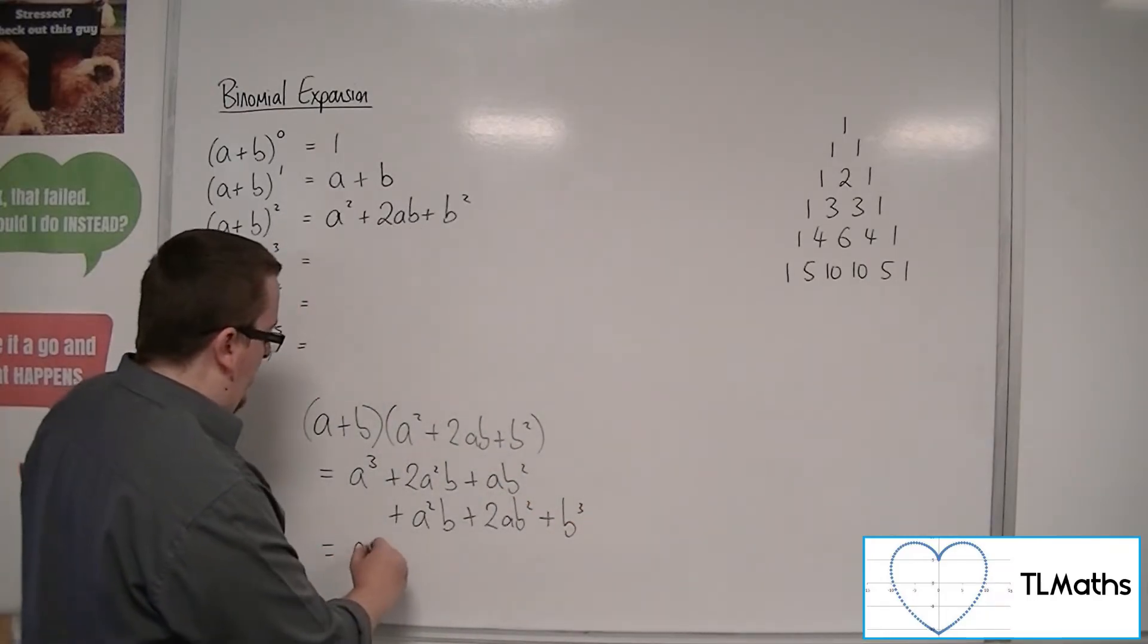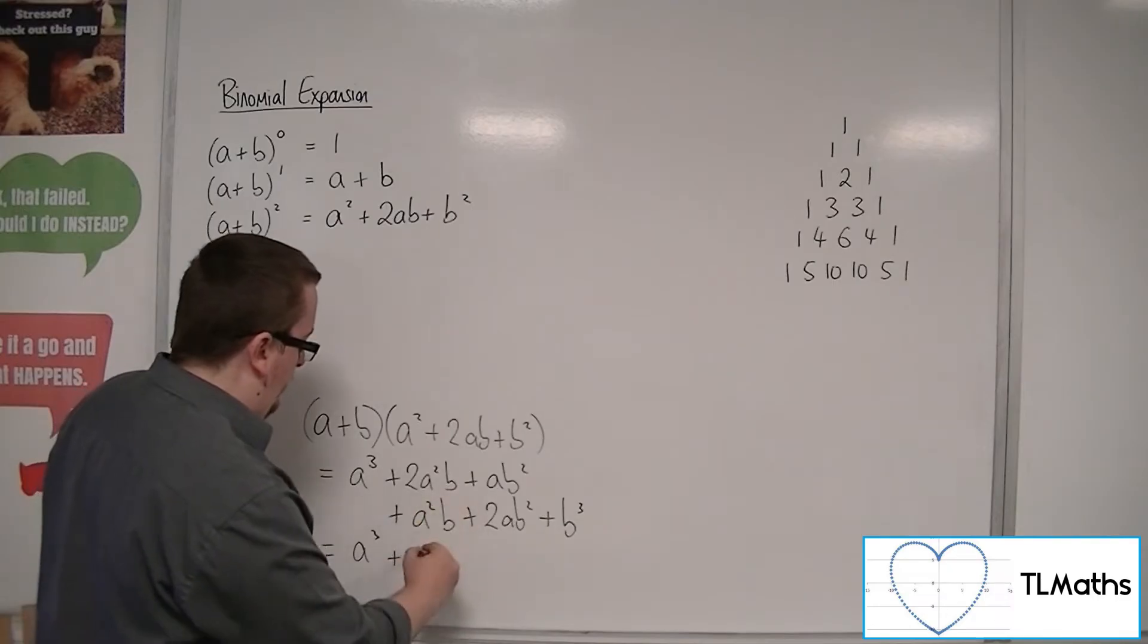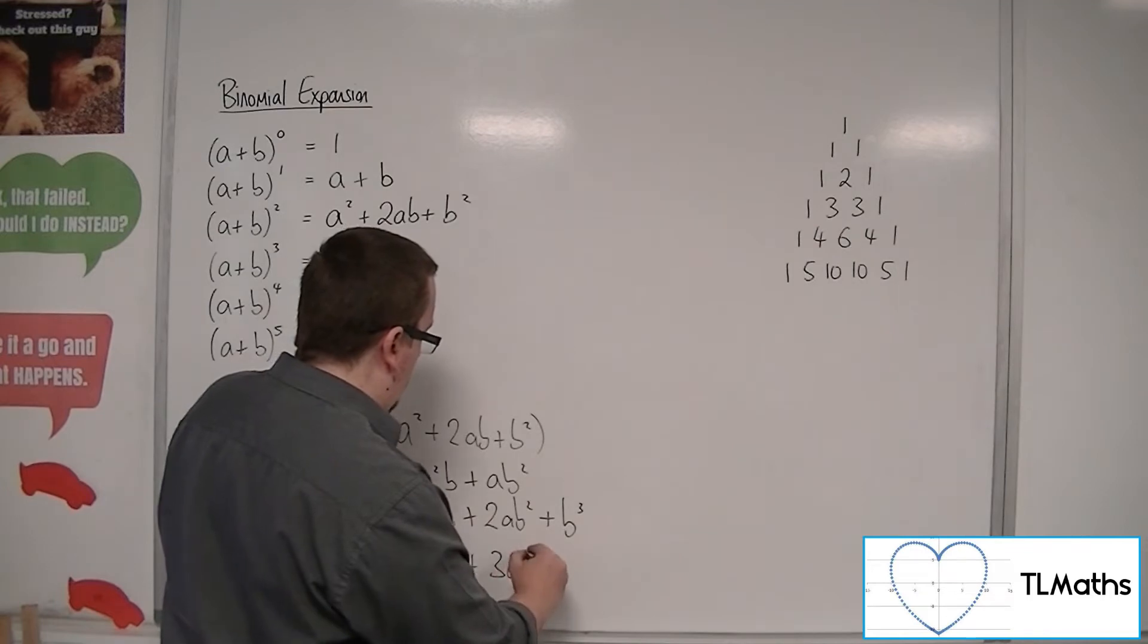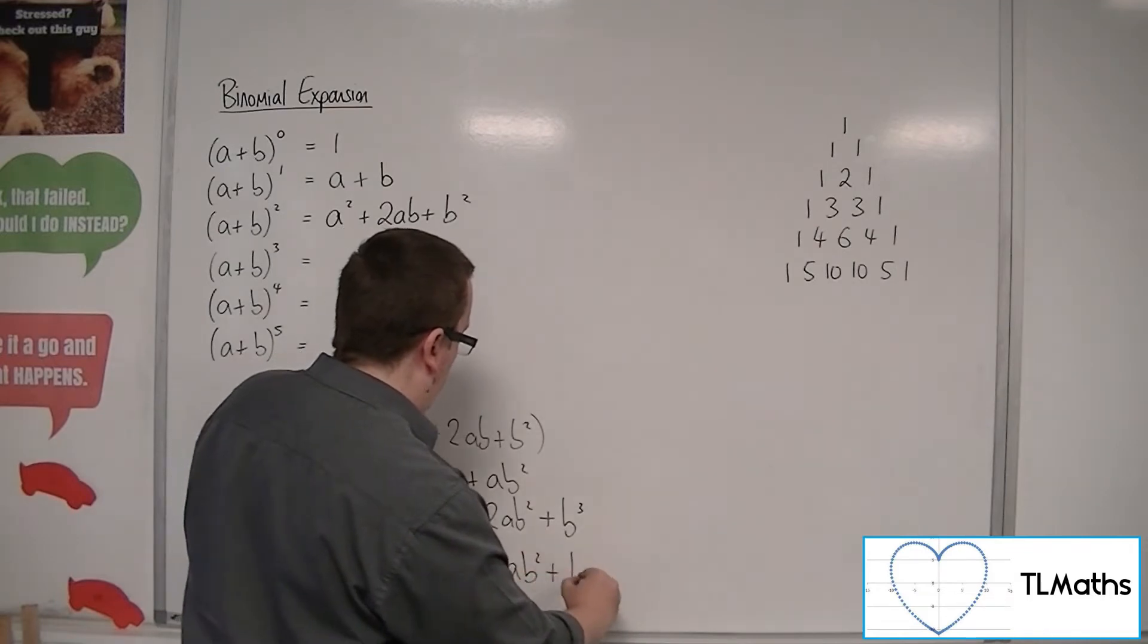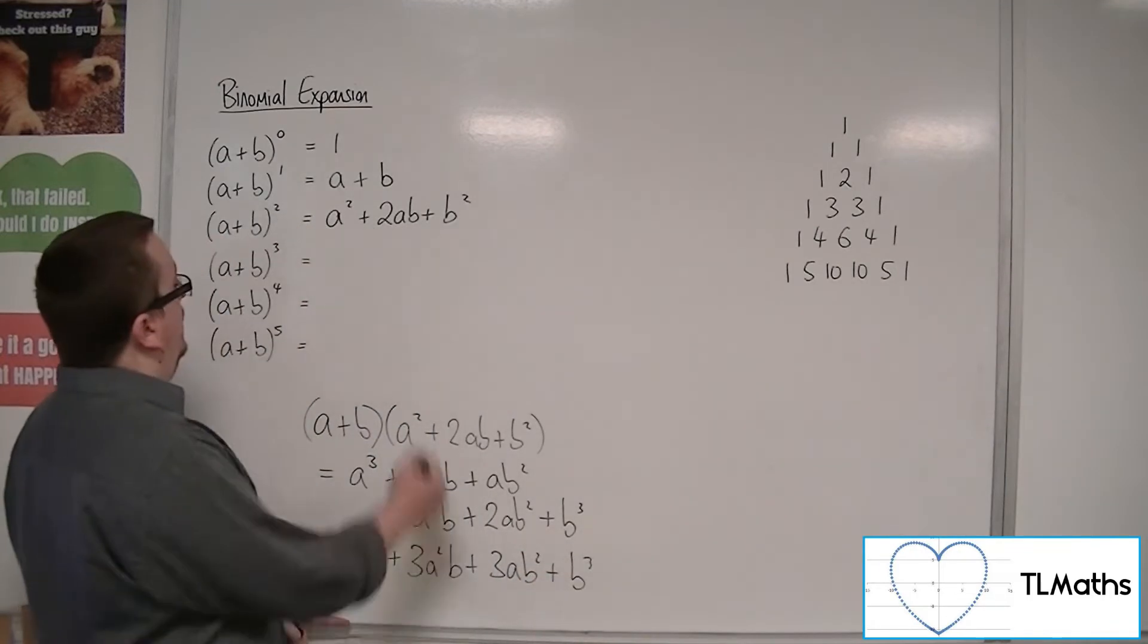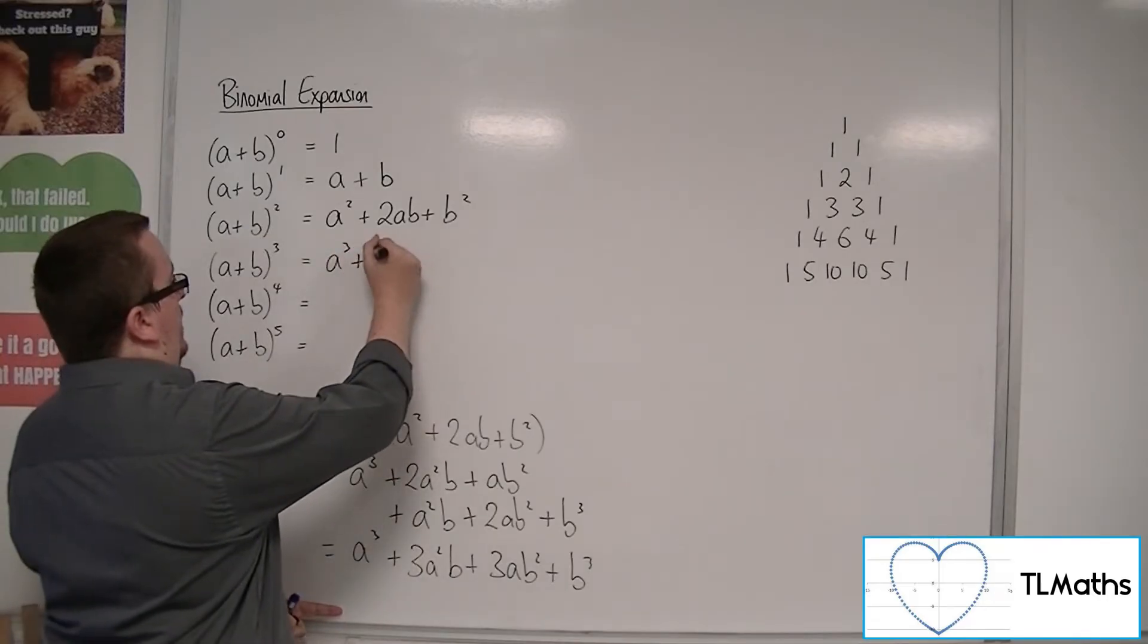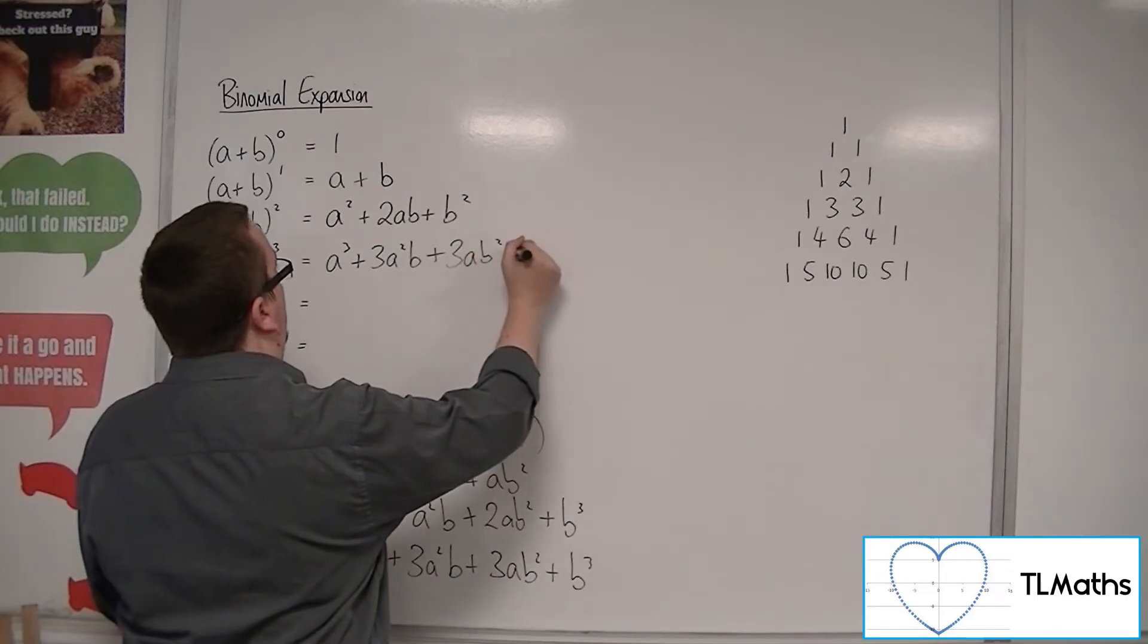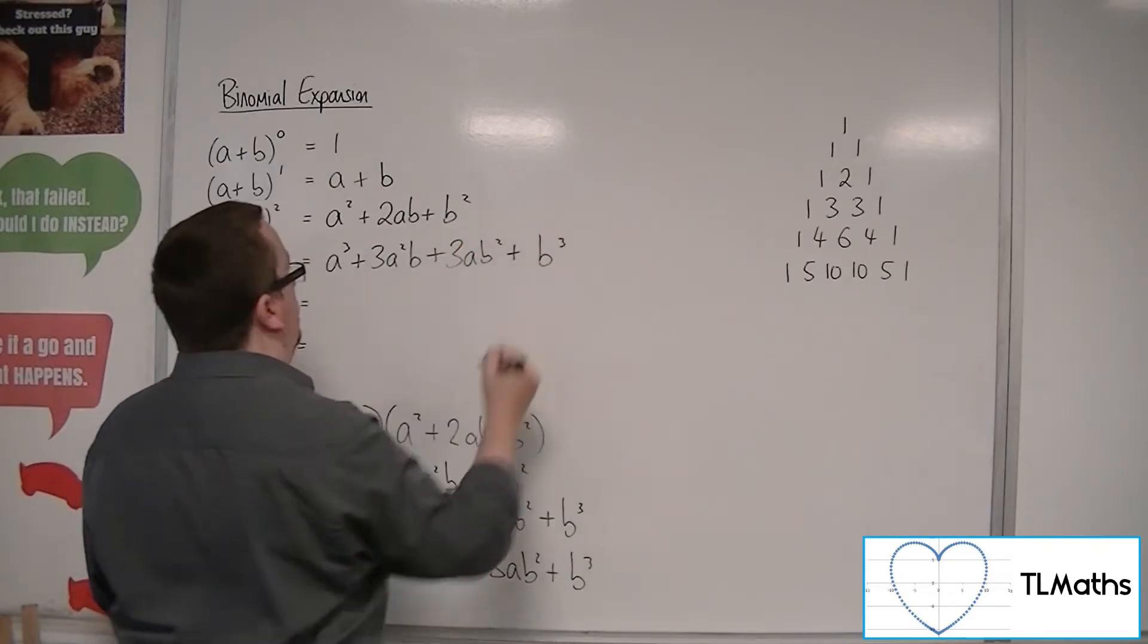So we have a cubed plus 3a squared b plus 3ab squared plus b cubed.